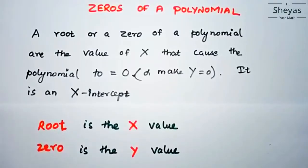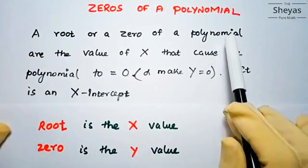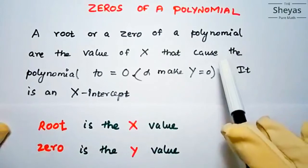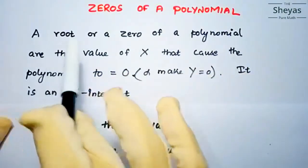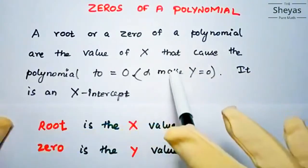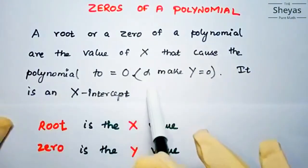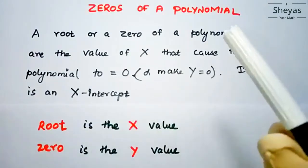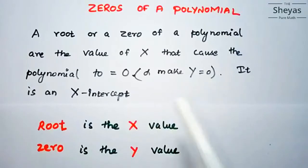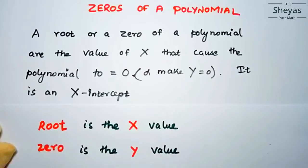Hi friends, today we are going to discuss the relationship between zeros and coefficients of a polynomial. First, let us discuss zeros of a polynomial. A root or zero of a polynomial is the value of x that causes the polynomial to equal zero, making y equal to zero — it is an x-intercept. Simply put, the root is the x value and zero is the y value.